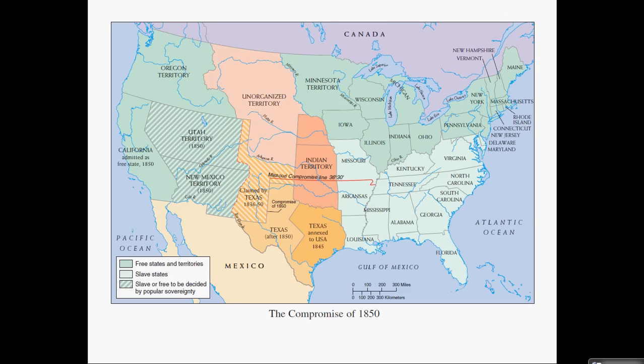The Compromise of 1850 is also huge. Even though California only became part of the territory in 1848, it became a state in 1850, meaning the population reached the required level by then. So that's impressive. When California was applying for statehood, the North and South were in a huge disagreement about whether California would become a slave state or a free state.